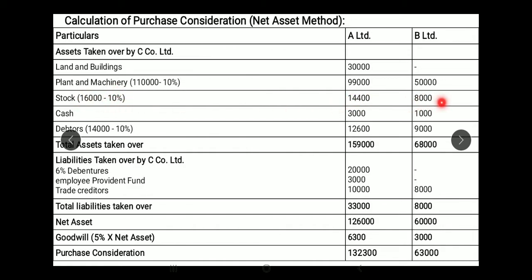B Limited's stock balance sheet value of 8,000 is taken as it is. Cash can never be revalued — so cash of 300 and 2,500 is written as is. Debtors of A Limited are 14,000 in the balance sheet, minus 10% gives 12,600. B Limited's debtors of 9,000 are taken at balance sheet value. Then we total all the assets taken over.